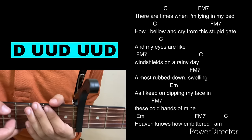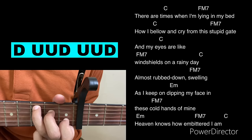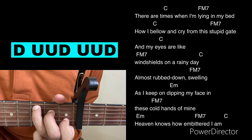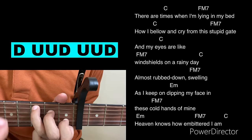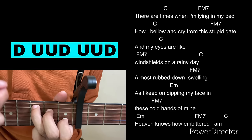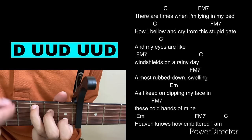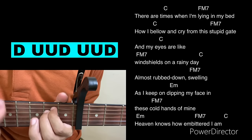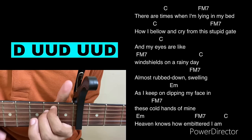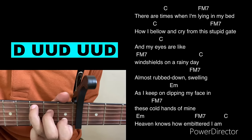Let's repeat from the beginning of the verse so you can follow along. There are times when I'm lying in my bed, how I bellow and cry from this stupid game. And my eyes are like wind chains on a rainy day, almost wrapped down swelling as I keep on deep in my face, in this cold house of mine. Heaven knows how embittered I am.